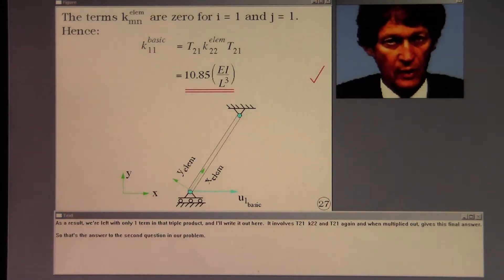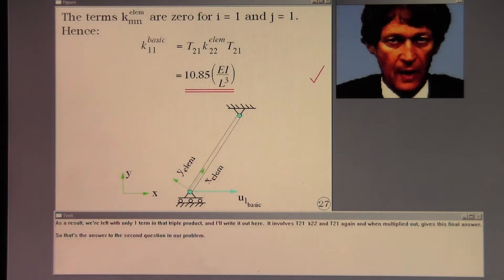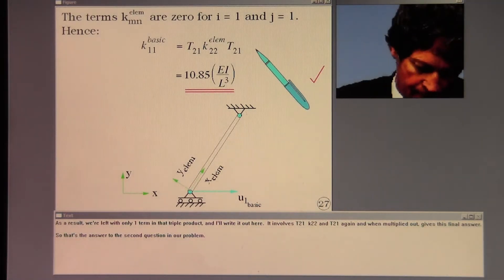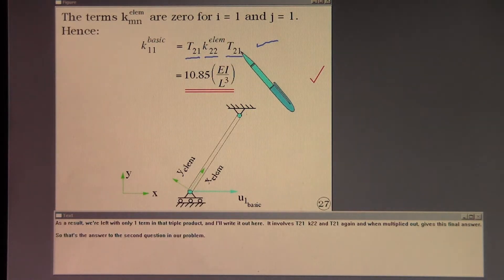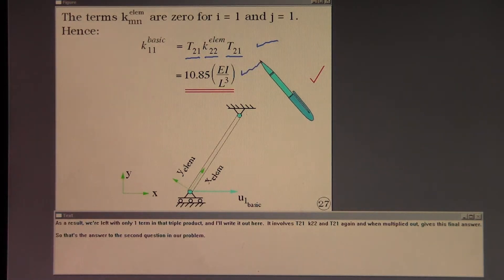As a result, we're left with only one term in that triple product, and I'll write it out here. It involves T21, K22, and T21 again. When multiplied out, this gives the final answer. So that's the answer to the second question in our problem.